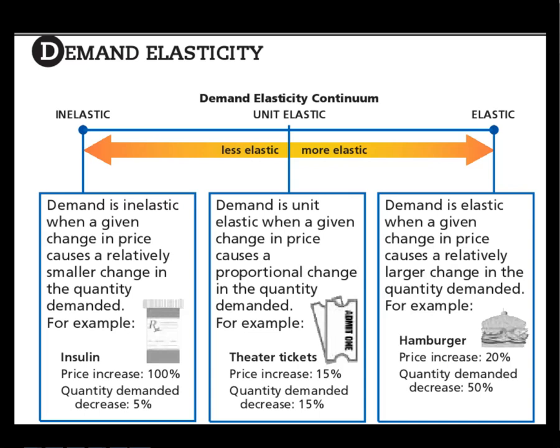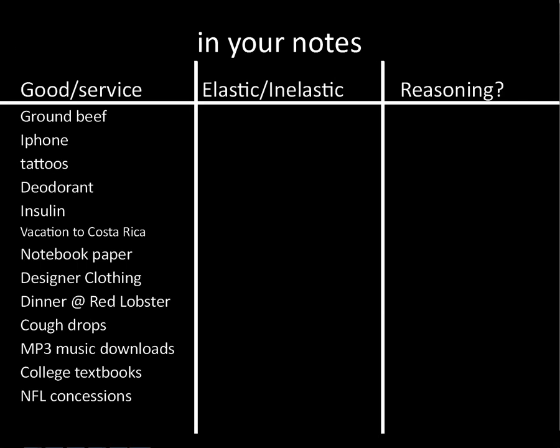Right in the middle is what's called unitary elastic — movie tickets kind of have this, where an increase in price of 15% is going to cause a decrease in quantity demanded of 15%. I'll leave this in the notes. Last thing: there's a little practice table — I'd put this in your notes or print out this slide. Here are goods and services; determine whether each is elastic or inelastic and explain why. If you want to email me, I'll go over the answers with you. So this is an intro to elasticity — elastic and inelastic.